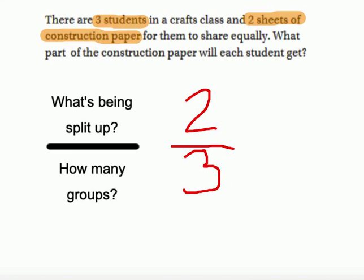Now this time, it is not an improper fraction. It's a regular fraction. But some of you might be saying, well, I don't know what two divided by three is. Well, two divided by three is staring at you right in the face. Two divided by three is two-thirds. So that means everyone would get two-thirds of a sheet of paper.